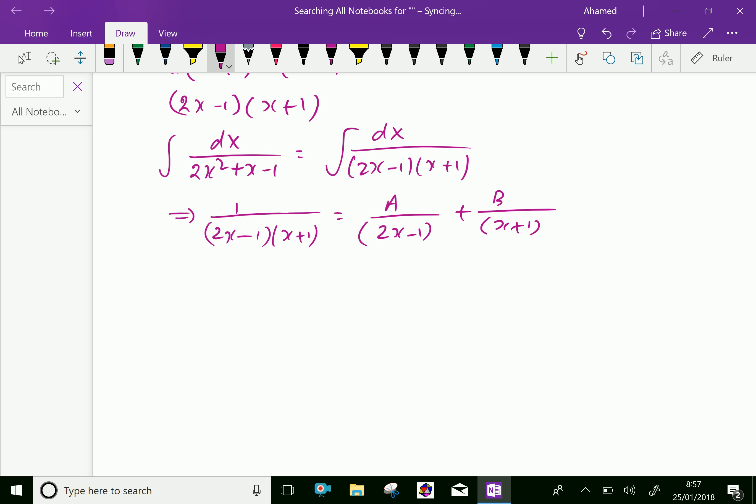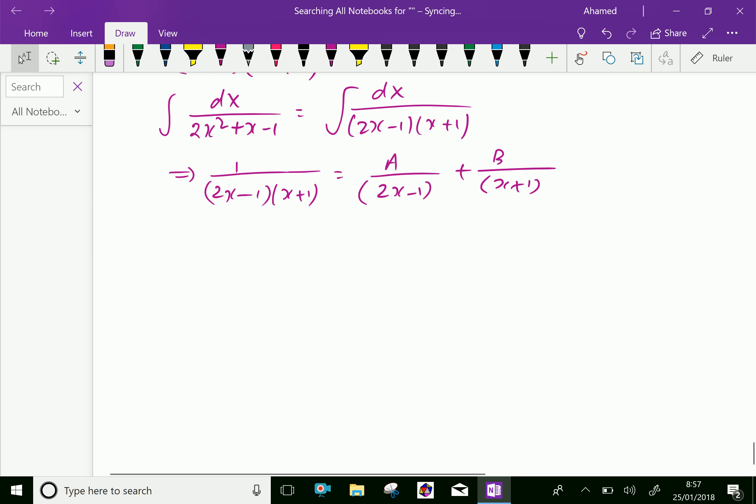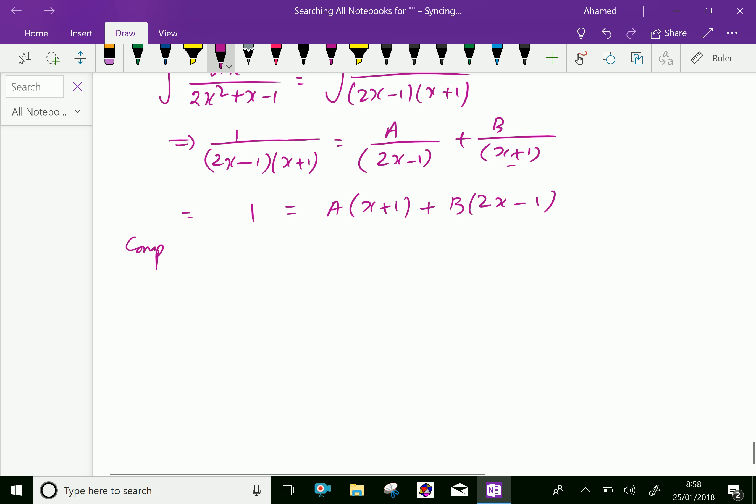Now, we will write the denominators on both sides, left and right side. The numerator is 1, and by cross-multiplying, the numerator is a into x plus 1 plus b into 2x minus 1. Now, comparing x, here left side there is no x, so 0 equals a plus 2b.